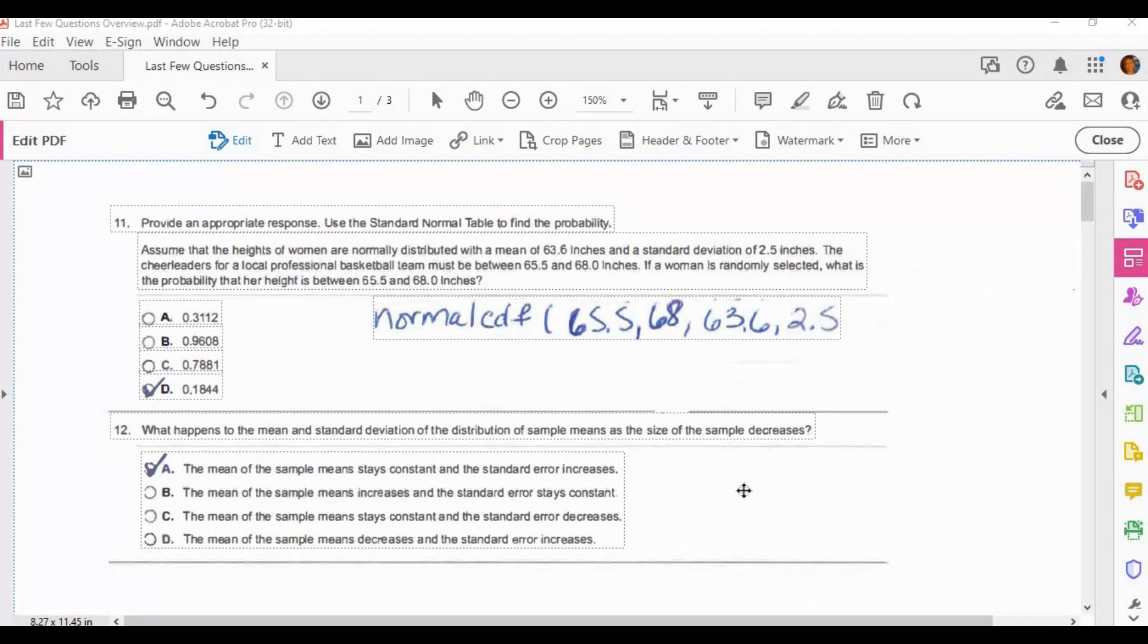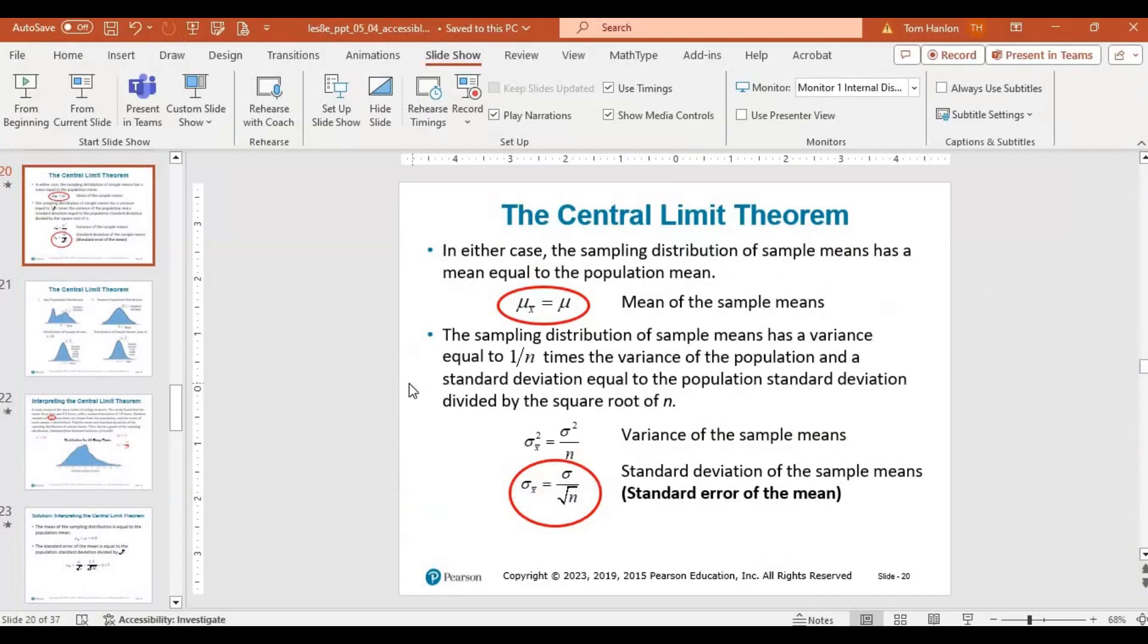Number 12 is a little bit different. It says, what happens to the mean and standard deviation of the distribution of sample means as the size of the sample decreases? That's a little confusing. So let's look at something that we covered briefly in 5.4. This is the central limit theorem. And this is what it's talking about, the sampling distribution of sample means.